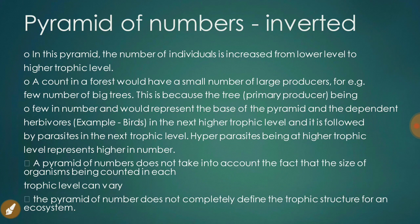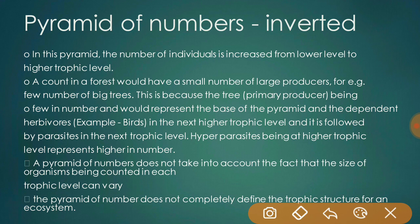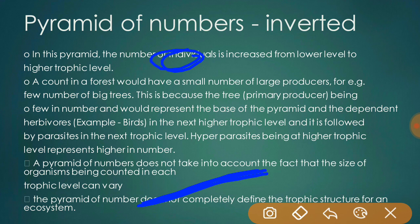The second type is the inverted pyramid of numbers, where the number of individuals increases from lower to higher trophic levels. In a forest ecosystem, there may be a small number of large producers such as a few big trees (primary producers), followed by many herbivores, carnivores, and consumers. A pyramid of numbers does not account for the varying sizes of organisms at each trophic level and it is difficult to count all organisms, so it does not completely define the trophic structure of an ecosystem.